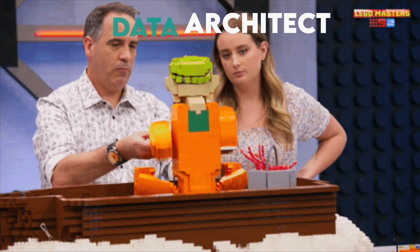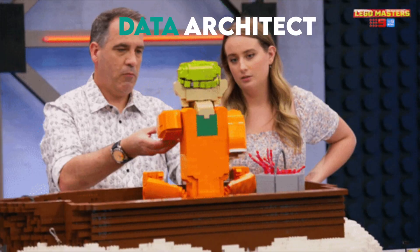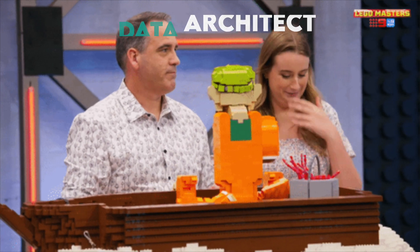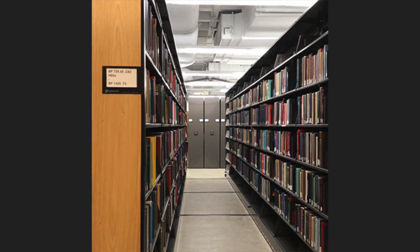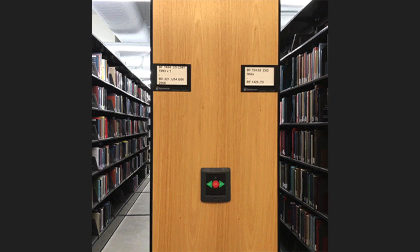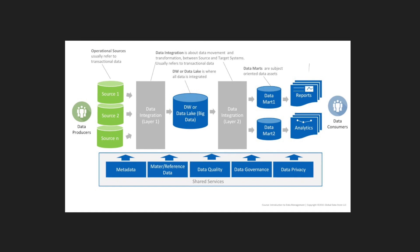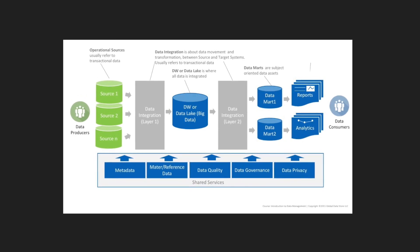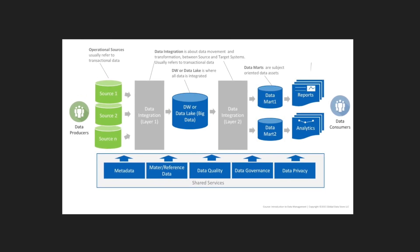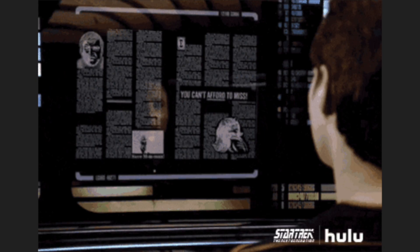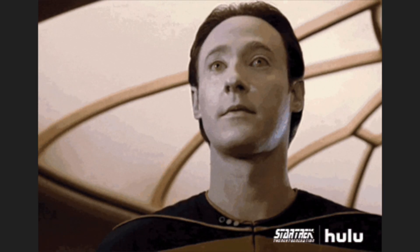Number one: data architect. Data architects plan the organization's data infrastructure so that the data is organized in the most efficient way to serve its users. They'll also figure out what tech stack to use to meet your needs, like Snowflake for analytics, and how to index all the different sources so they can play well together.